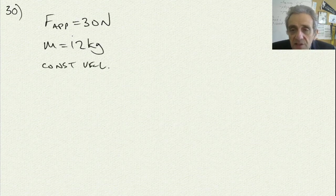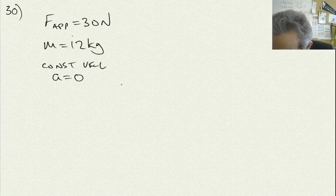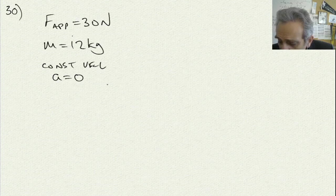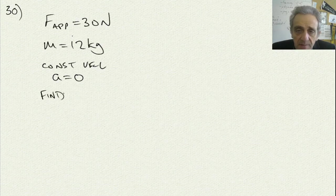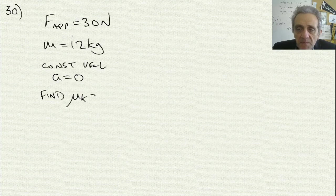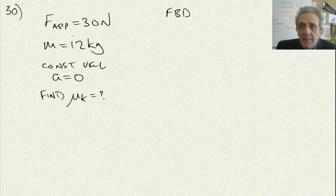We're also told that it's moving at a constant velocity. This translates into acceleration being equal to zero. And the question is asking what is the coefficient of kinetic friction — so we have to find μk. Let's start out by doing the free body diagram first.